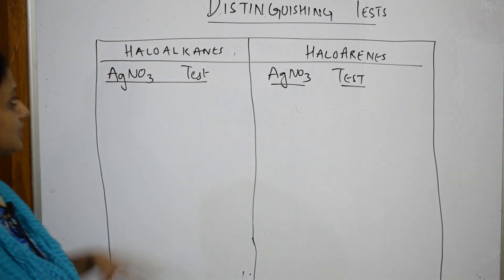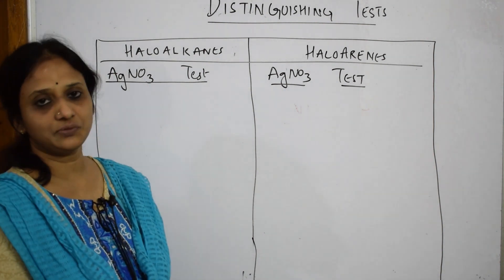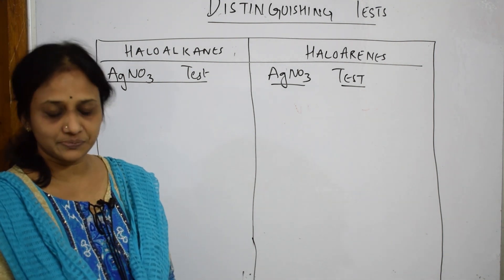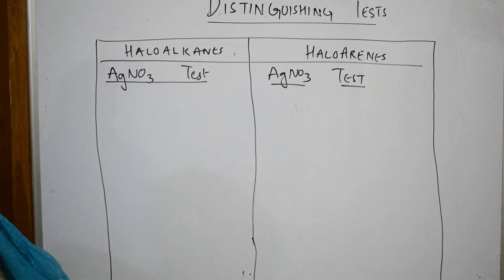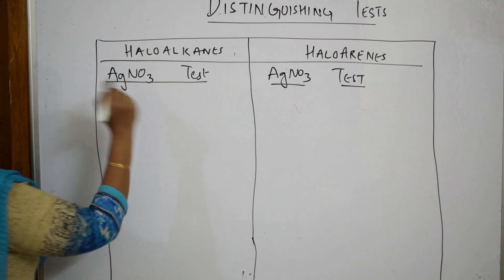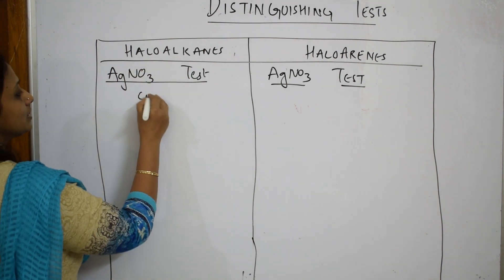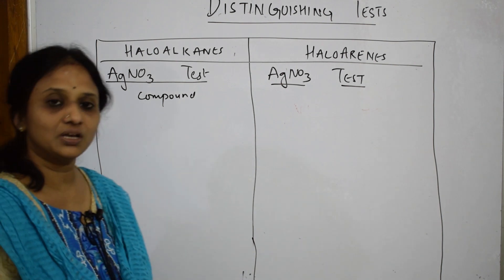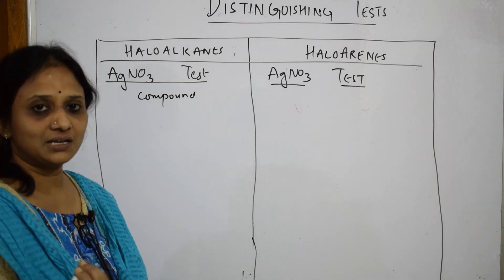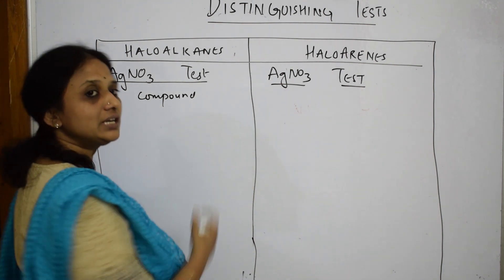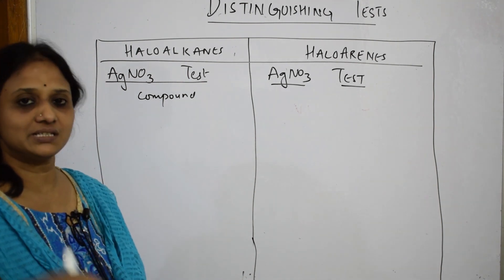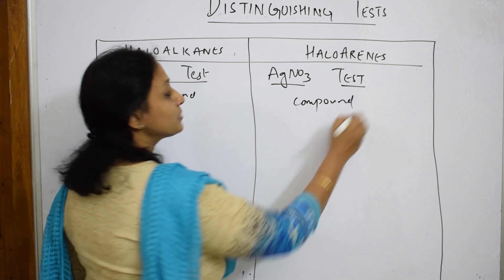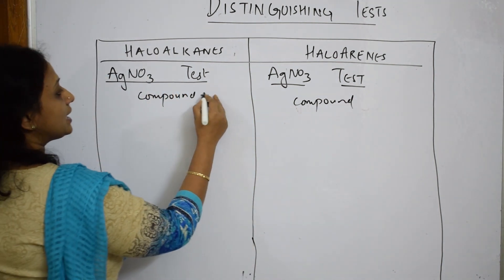When this question is directly given, how should I write the test? The test used is the silver nitrate test. Basically, you are going to take the compound — for haloalkanes: RCl, RF, RBr, like that — and for haloarenes: chlorobenzene, bromobenzene, anything like that.